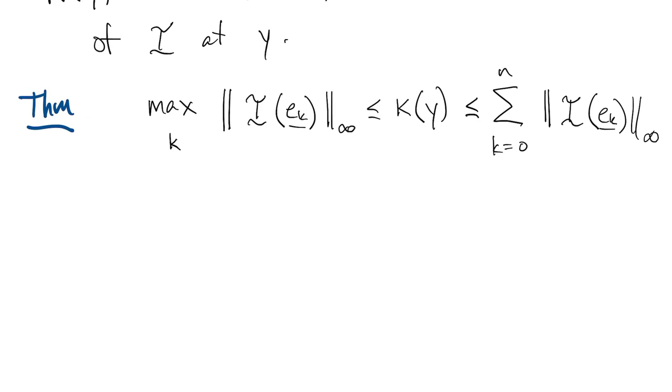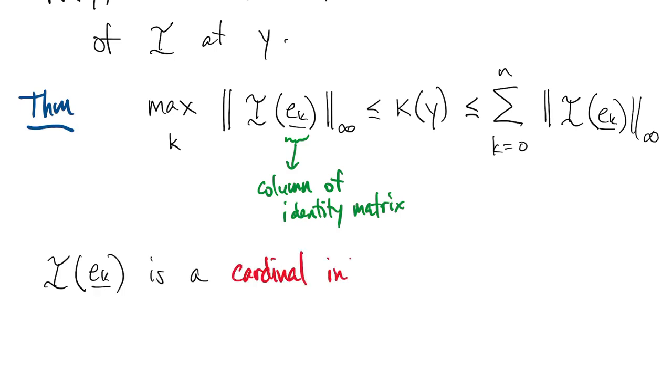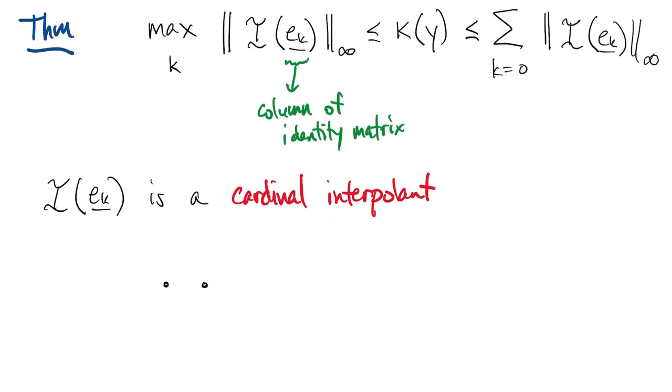As usual, ek is a column of the identity matrix. The interpolant of ek is called a cardinal interpolant. It has a value of 1 at node k, and a value of 0 at all the other nodes.